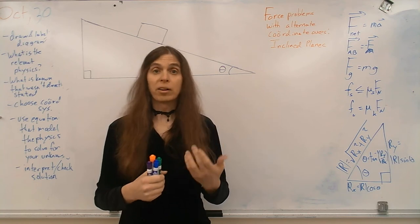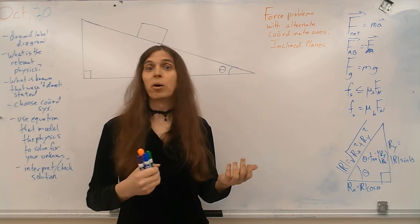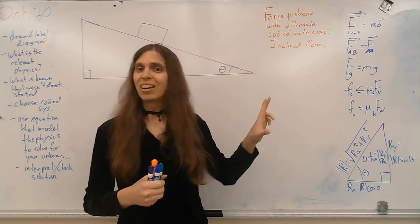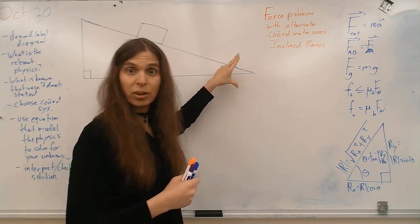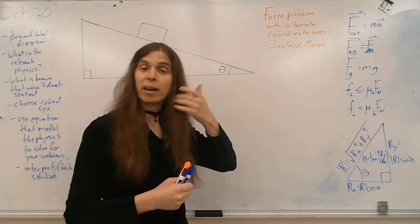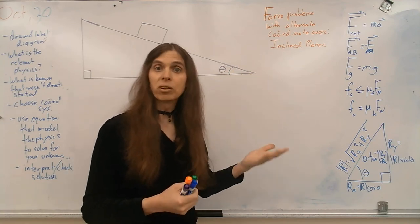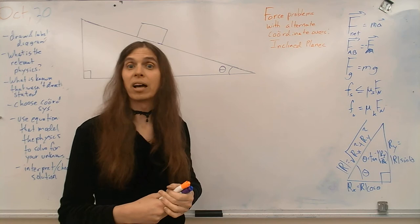and other vectors involved in motion that are not aligned with our traditional y is vertical, x is horizontal coordinate system, and how we approach those problems. Particularly, we're going to take a look at what goes on with an inclined plane.